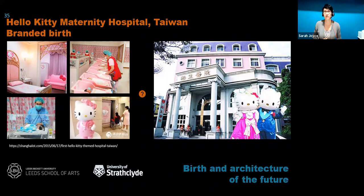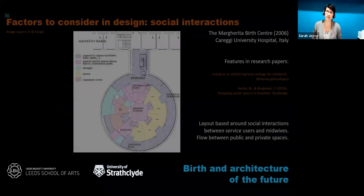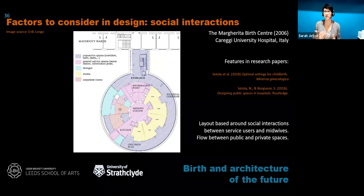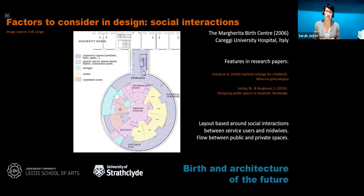Let's look at more promising examples from across the globe — it's easy to be inward-looking and assume our design solutions are universal. Firstly, social interaction: buildings shape the behaviour of users, as emerged strongly from my PhD. The Margherita Birth Centre in Italy uses a circular plan — not the long linear hospital ward you may be familiar with — which conveys labouring women and their supporting midwives into separate zones, then brings them together in birth rooms. This project features in a number of research papers on the birth environment.